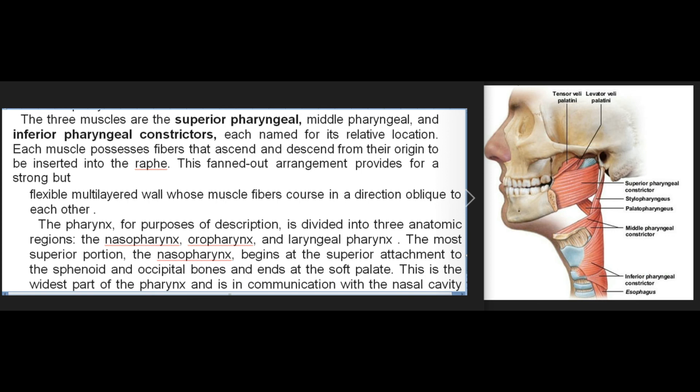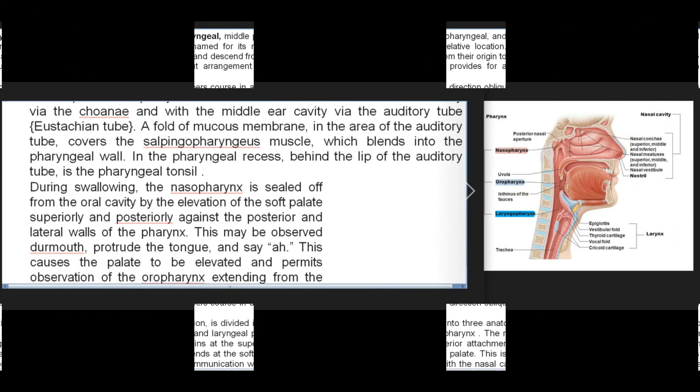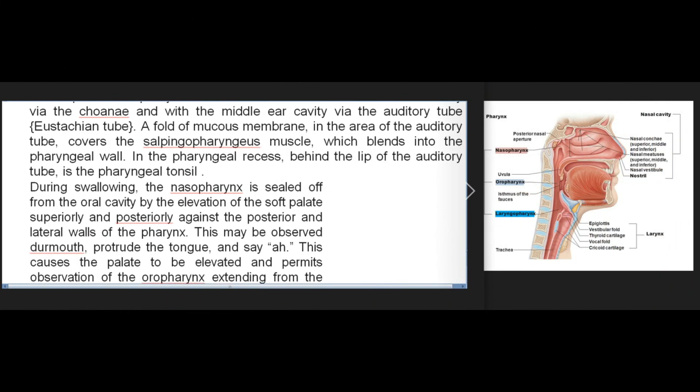The pharynx is divided into three anatomic regions: the nasopharynx, oropharynx, and laryngopharynx. The nasopharynx, the most superior portion, begins at the superior attachment to the sphenoid and occipital bones and ends at the soft palate; it is the widest part of the pharynx, in communication with the nasal cavity via the choana and with the middle ear cavity via the auditory tube (Eustachian tube). A fold of mucous membrane in the area of the auditory tube covers the salpingopharyngeus muscle. In the pharyngeal recess behind the lip of the auditory tube is the pharyngeal tonsil.